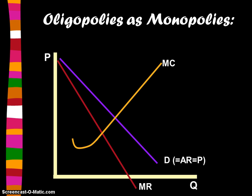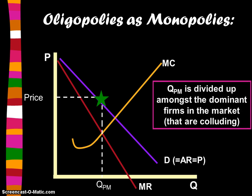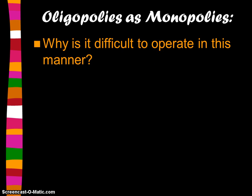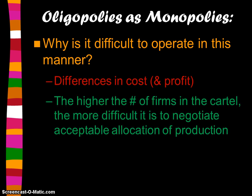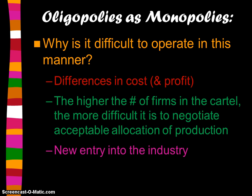It's difficult for oligopolists to operate as a cartel, especially in the long run, because they have differences in cost and profit. The higher the number of firms in the cartel, the more difficult it is to negotiate acceptable allocation of production. When new entry comes into the industry, you have to convince the new entrant to join or they bust you. And there's a high incentive to cheat, because cheating could increase profits for the cheating firm — so it's very tempting to cheat.